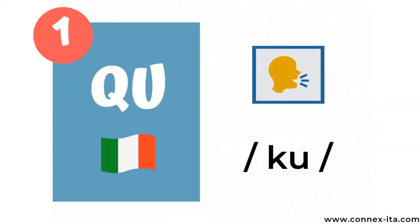So let's have a look at the letter Q first. In Italian, Q is always followed by the vowel U and you'll never find it on its own. The way you pronounce this sound is Q. Try to say it a couple of times.